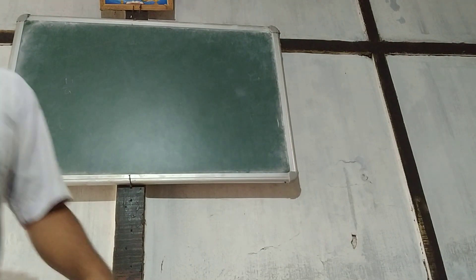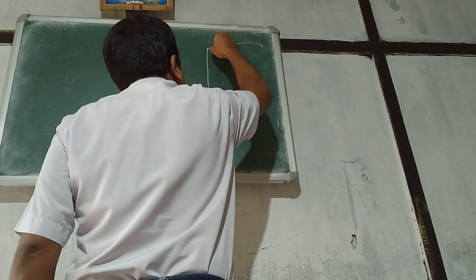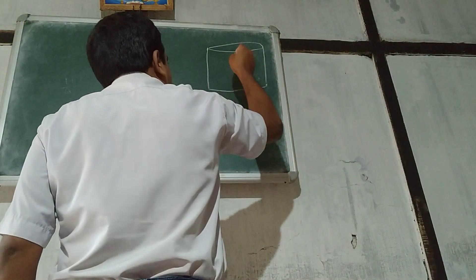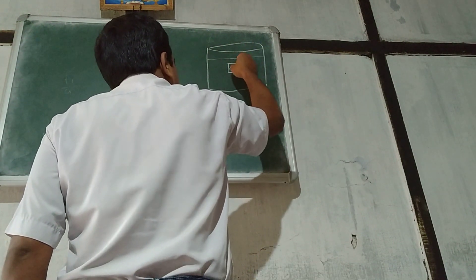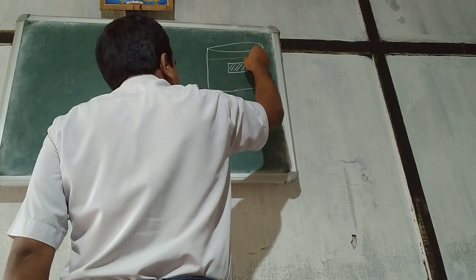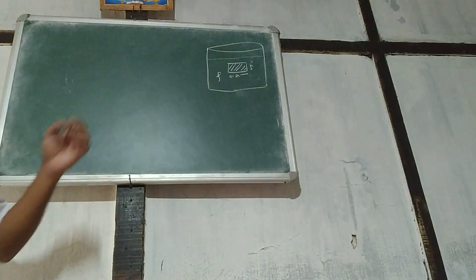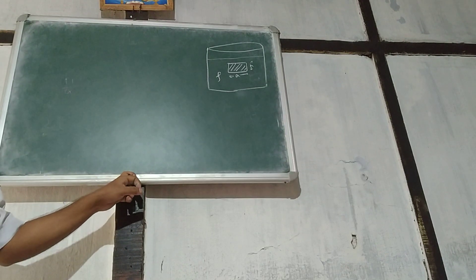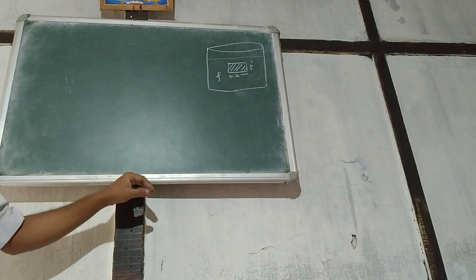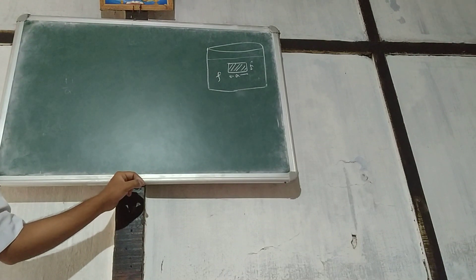Variation of pressure with depth. Let us consider a cube. There is a liquid column, the whole liquid. This is height H, area A, density rho. Let us consider a cubical liquid column of height H, density rho, and base area A.